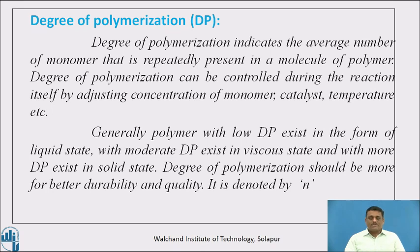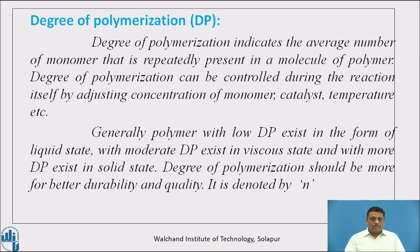Degree of polymerization can be controlled during the reaction itself by adjusting the concentration of monomer, catalyst, temperature, etc. Generally, a polymer with low degree of polymerization exists in liquid state; with moderate degree of polymerization, it exists in viscous state; and with high degree of polymerization, it exists in solid state. Therefore, degree of polymerization should be higher for better durability and quality, and is denoted by small n.